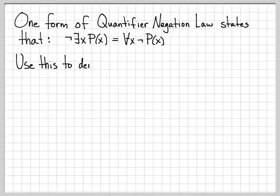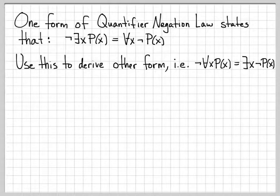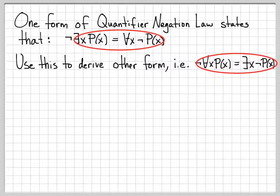What we're going to do is use this to derive the other form. The other form of the quantifier negation law says that not for all x P of x is equal to there exists x not P of x. So this is what we're going to assume is true, and we're going to derive this other form.